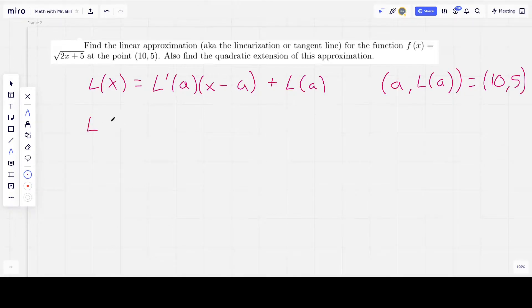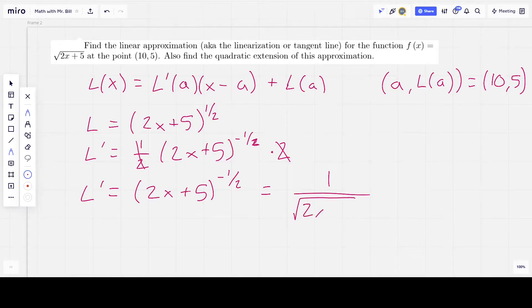Let's find L prime first. So, L is equal to (2x plus 5) raised to the 1/2. And then we take the derivative of this, bring the 1/2 down front, subtract 1 from the exponent, so that's going to be negative 1/2, and then times by the derivative of the inside, so times 2. So, the 1/2 and the 2 cancel, and we're left with L prime is equal to (2x plus 5) raised to the negative 1/2, or in other words, 1 over the square root of 2x plus 5.